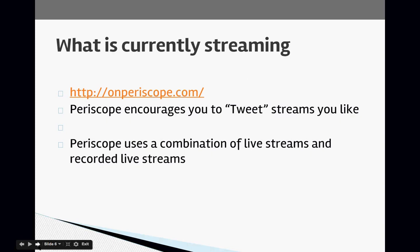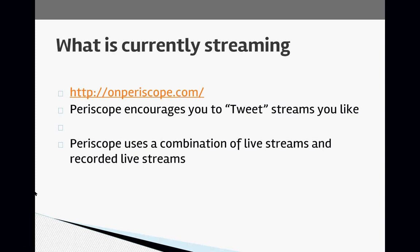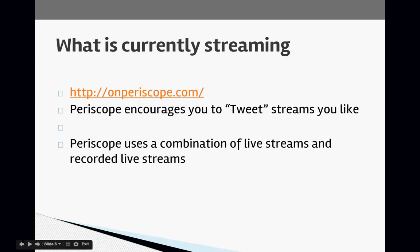What is currently streaming on Periscope? If you type in onperiscope.com, you will see some of the live streams going on right now. Periscope encourages you to tweet streams that you like, and it uses a combination of live streams and recorded live streams. So when you go to onperiscope.com, you'll see scopes that are live as well as scopes recorded a little earlier. It's a wonderful way to find out who your favorite scopers are.